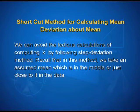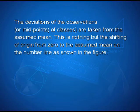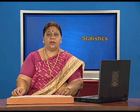Now let us learn the shortcut method for calculating mean deviation about mean. We can avoid the tedious calculations of computing x-bar by following the step deviation method. In this method, we take an assumed mean which is in the middle or just close to it in the data. Then deviations of the observations or midpoints of classes are taken from the assumed mean.